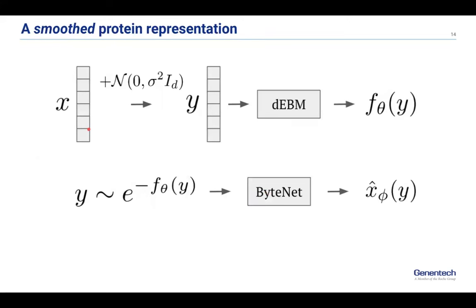To make this very concrete for proteins, this is what we do in walk-jump sampling. Take an amino acid sequence and transform it into one-hot vectors — the simplest representation possible, a vector that tells you what amino acid is in each position. Add isotropic Gaussian noise to that one-hot vector, and train an energy-based model that learns an energy function over these noisy one-hot encodings. Now you have a trained generative model, and you can sample new noisy pseudo-one-hot objects from your energy-based model.